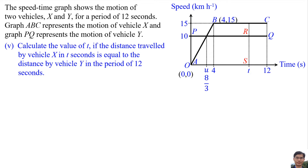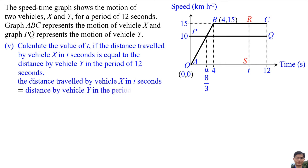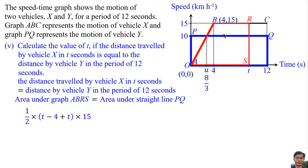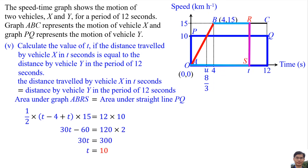Number 5: Calculate the value of T if the distance traveled by vehicle X in T seconds equals the distance traveled by vehicle Y in the period of 12 seconds. The distance traveled by vehicle X in T seconds is the area under graph AVRS, which is a trapezium: half times (T minus 4 plus T) multiplied by the height X. The area under straight line PQ is half times 10. Solving the equation, T equals 10.